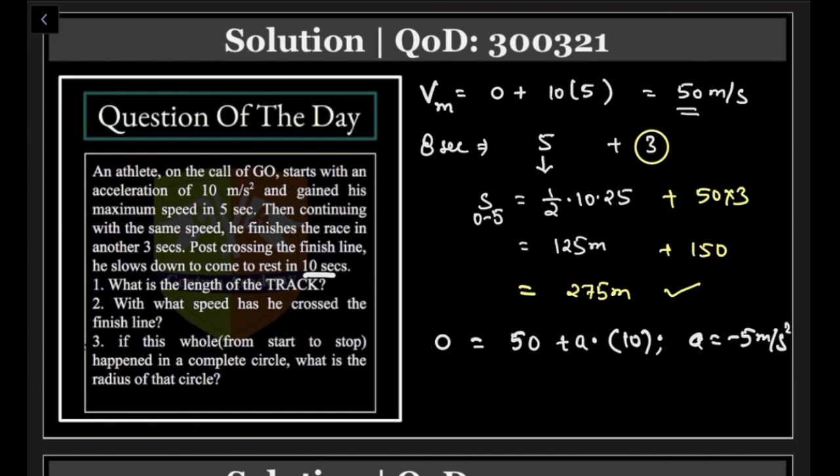If this whole thing happened in a complete circle, what is the radius of that circle? You have to find the total displacement, so including this part. s = ut - (1/2)at², so s = 50(10)...